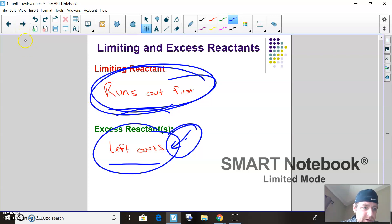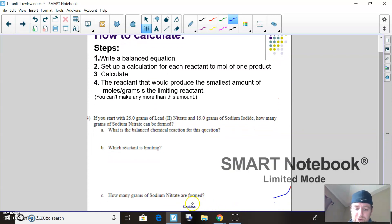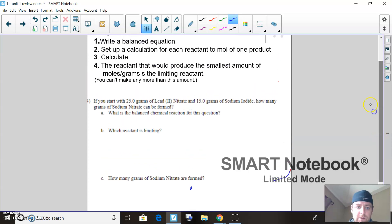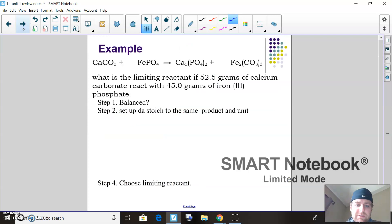Here's the only thing that we do differently. I'll just show you how to set it up—you can do the calculations later. Write a balanced chemical equation. Set up calculations for both reactants. The one that would produce the smallest amount is the limiting reactant.